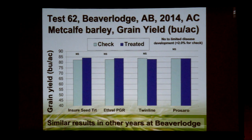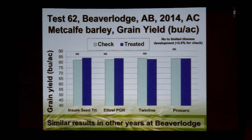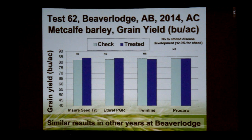The first slide shows data from Beaverlodge, Alberta in 2014. The point is: if you don't have a risk of leaf disease, there's no point in spraying a fungicide — you're not going to see a plant health benefit and you're not going to see a yield response; in fact your net returns are going to be lower. We saw the same pattern in other years in Beaverlodge: if there's no significant disease risk as the crop moves from stem elongation to flag leaf emergence to head emergence to anthesis, there's no need to apply fungicide — it's a waste of money.